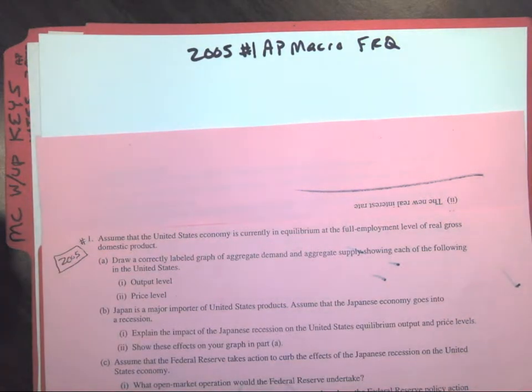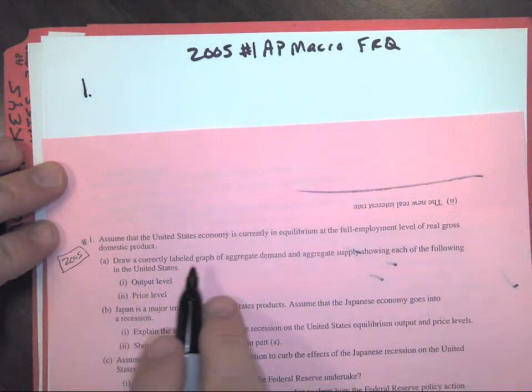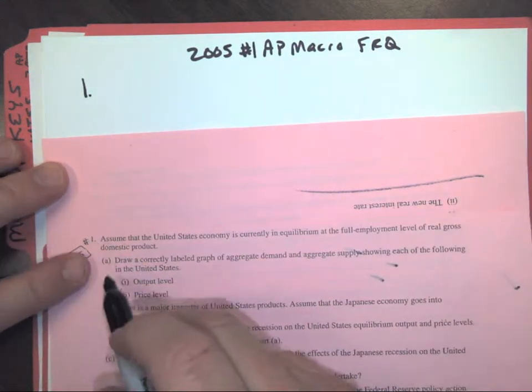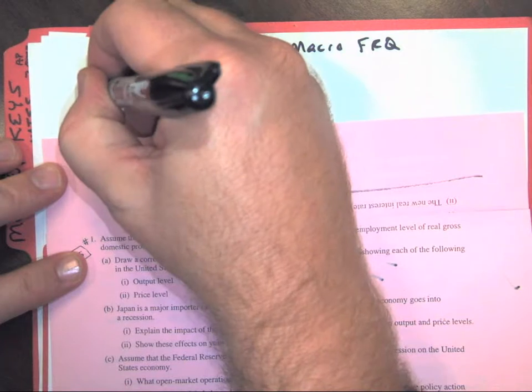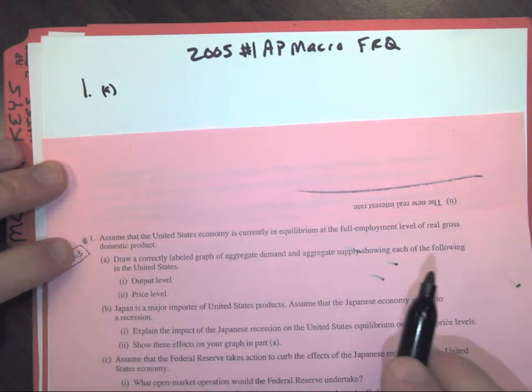Okay, whenever you guys do your FRQs, make sure you structure them how they're written out like this. So it says number 1, then you go 1 and then put A. So it's just easier for the grader or the reader to check these.